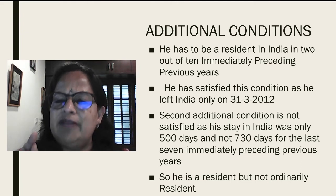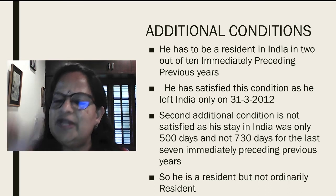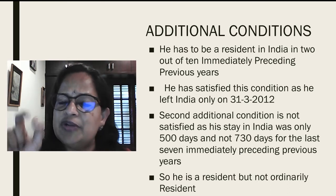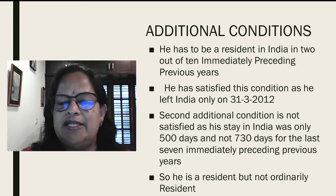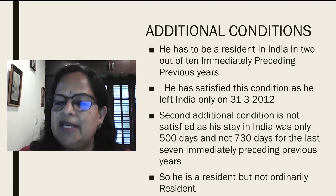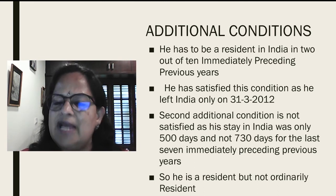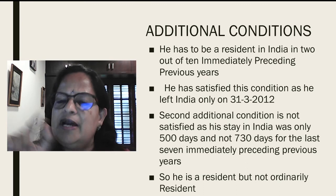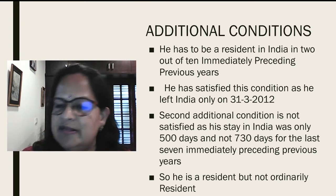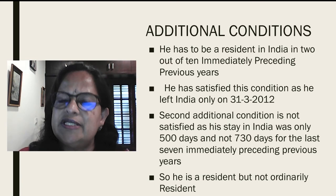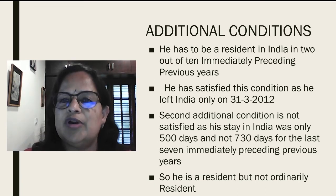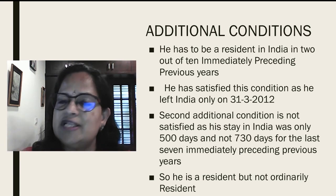Therefore, he is a resident but not ordinarily resident — the second category. An important note for students: always write the residential status clearly — either 'resident and ordinarily resident' or 'resident and not ordinarily resident' — and underline it. These two are different classifications and it is very important to distinguish them.